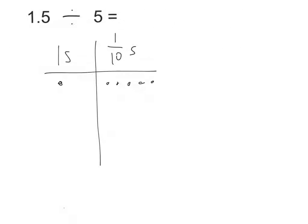Now we have 1 and 5 tenths divided by 5. Can we divide 1 one by 5? Is there a better way to represent this number that will help us divide it by 5? I can regroup this 1 one and turn it into 10 tenths — 1, 2, 3, 4, 5, 6, 7, 8, 9, 10. Now I have no ones left. Sherilyn says I have 15 tenths. Why is it better to think of 1.5 as 15 tenths rather than 1 and 5 tenths? Because we already know the math fact: 15 divided by 5 equals 3. It's much better to think of 1.5 as 15 tenths because 15 is the number we need.